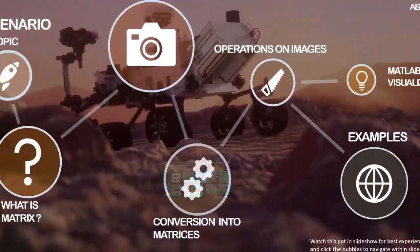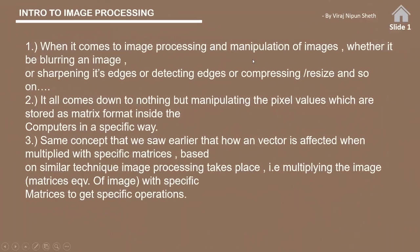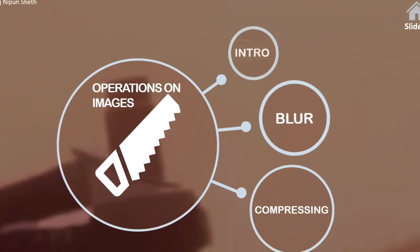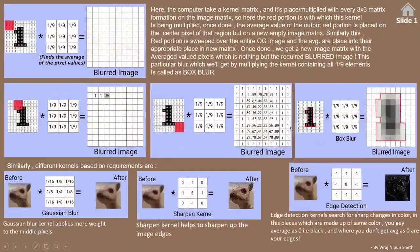Now let's take a look at how matrices are used to perform operations on images. Based on the same vector multiplication concept discussed earlier, here we will take a kernel matrix and multiply it with a group of pixels on the image to get the required outcome. We'll discuss two basic but most popular operations that can be performed on an image. Let's see the blur operation — first, the box blur effect.